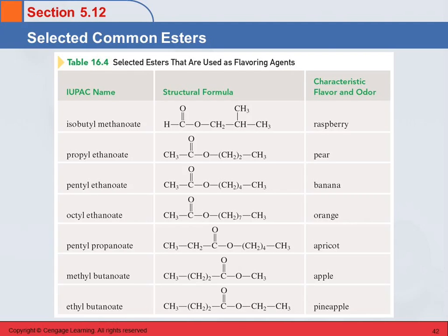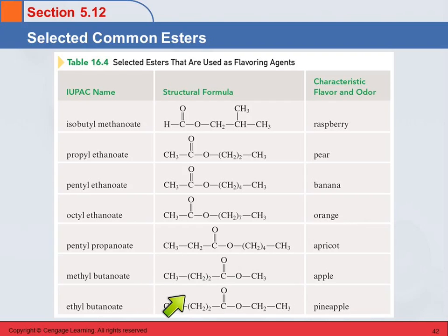Here's a table showing some of the esters and the flavors that they have. This one has the flavor of raspberry — isobutyl methanolate. Here's the apple and the pineapple: it's all the same except this is methylbutanoate and this is ethylbutanoate. Small difference, big result. You should know that many of the flavors of fruits come from esters; I'm not going to make you memorize any of those specifically, but it's interesting.